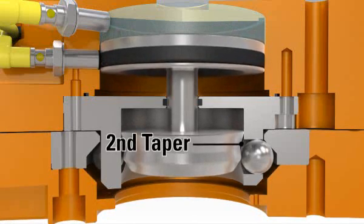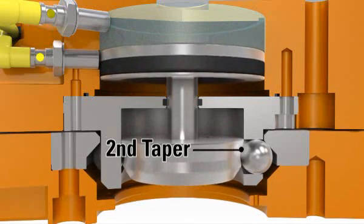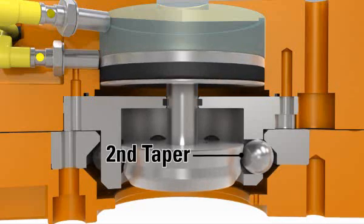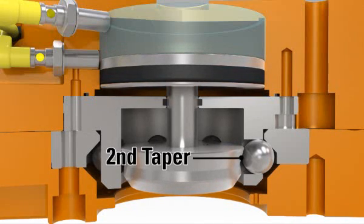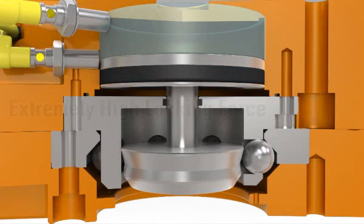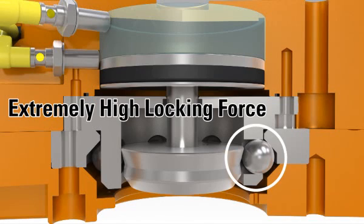The second taper of the cam forces the locking balls further out and under the bearing race, pulling the tool plate to the locked position. The second taper of the cam creates extremely high locking forces, securely coupling the master plate and tool plate to provide high load carrying capacities.